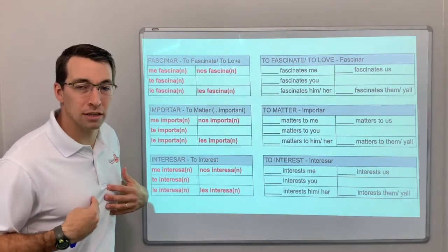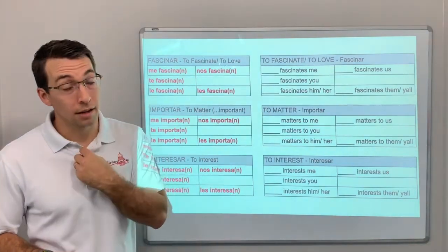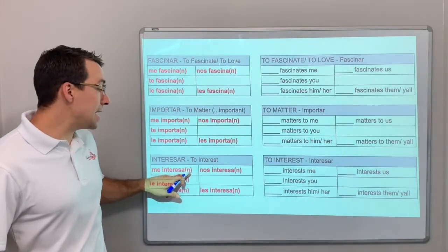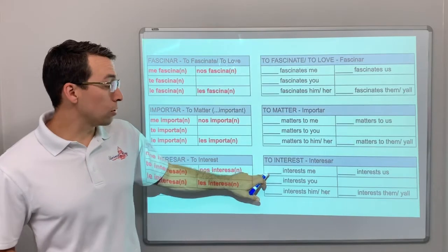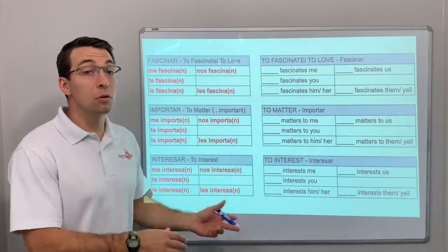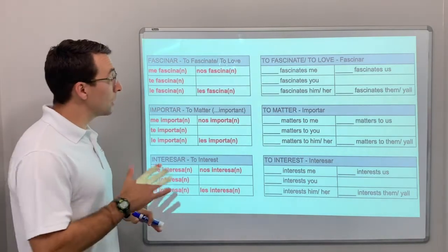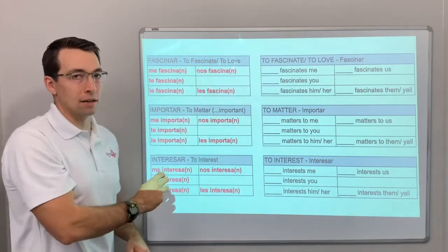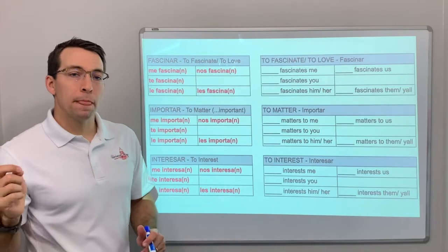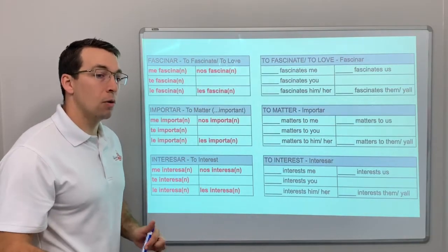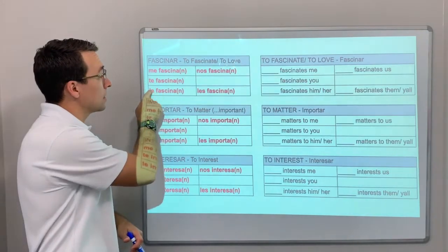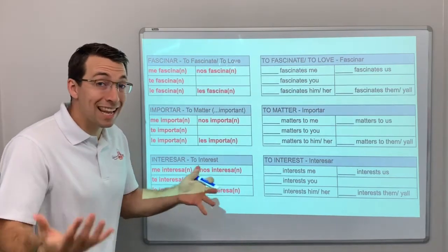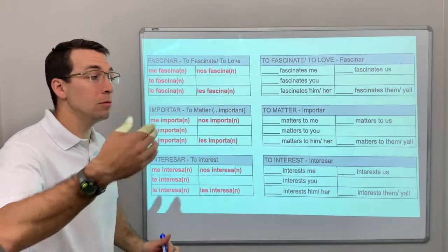Interesar — something interests me or it's interesting to me. Me interesan las computadoras — computers interest me, computers are interesting to me. You conjugate the verb as fascina or fascinan. You have to conjugate the verb in the third person. What gives the meaning is the indirect object pronoun — me, te, le, nos, les — which tells you who does the liking, who likes it, or who it's important to.